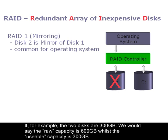If, for example, the two disks are 300 GB, we would say the raw capacity is 600 GB, while the usable capacity is 300 GB.